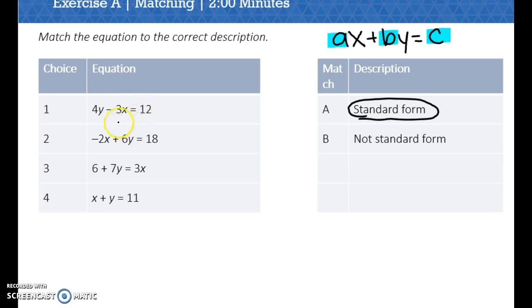So if we take a look at a, you see how this y comes first? Well, in order to be in standard form, it actually needs to go in this order: ax plus by equals c. So this would not be in standard form. In the second one, it says negative 2x plus 6y equals 18. Well, that follows this pattern. So that is in standard form.